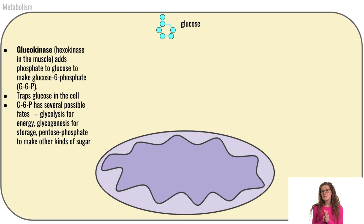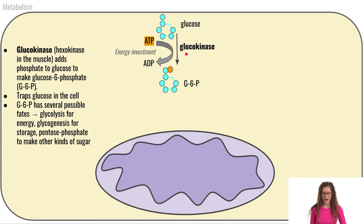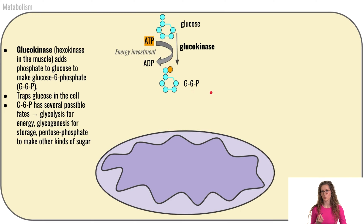We're going to start talking in more detail about some of the enzymes involved in metabolic processes related to carbohydrates. Starting with glucose at the top, the first step is that glucose will have a phosphate added to it. The specific enzyme responsible for this is glucokinase, which uses ATP to add one phosphate onto glucose, converting it to glucose-6-phosphate, or G6P.